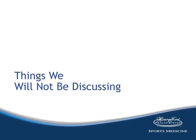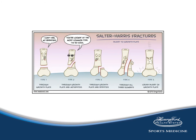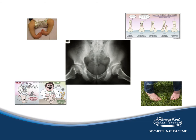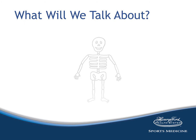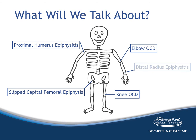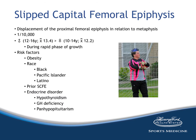Let's start talking about some specific problems. But first, let's talk about what we won't be discussing today: Salter-Harris fractures, clubfoot deformities, hip deformities, avascular necrosis, Osgood-Schlatter's, Sinding-Larsen-Johansson, or Sever's — those will all come in future lectures. What will we talk about today? Looking at the pediatric skeleton, we're going to discuss slipped capital femoral epiphysis, osteochondritis dissecans of the knee and elbow, proximal humerus epiphysitis, and distal radius epiphysitis.